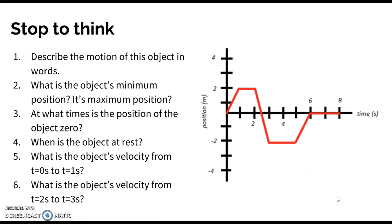Now I have some questions. First, describe the motion of this object in words — we have a position versus time graph on the right. One possible explanation: you're at a stop sign. In one second, you walk two meters at a constant rate in front of the stop sign — calling in front of the stop sign the positive direction.